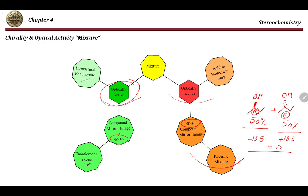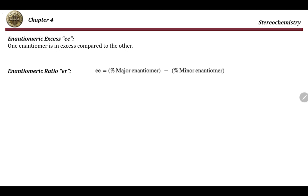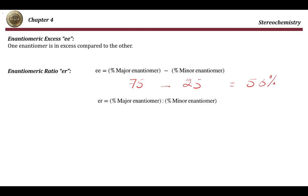For example, if instead of 50/50 you have 75% of one enantiomer and 25% of the other, their effects do not cancel and we describe this using enantiomeric excess. Enantiomeric excess means one enantiomer is present in excess of the other; you calculate it by subtracting the percentages: 75 − 25 = 50%. This tells you the major enantiomer is in 50% excess over the other.